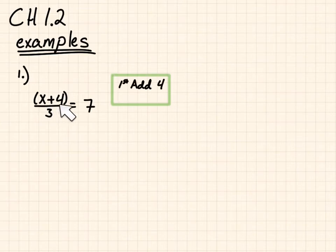So, first, x is being added by 4. Added to 4. And then second, you're dividing the whole thing by 3.